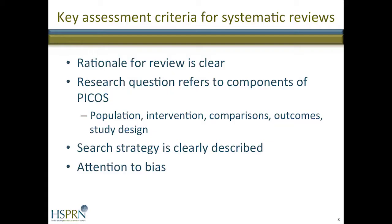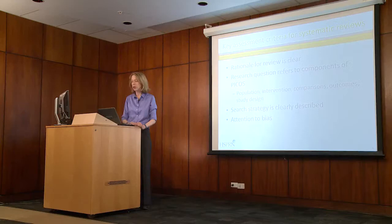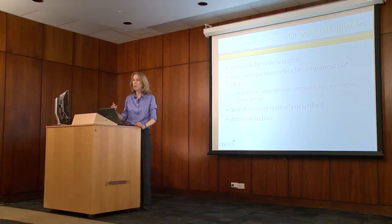There are several key assessment criteria for a systematic review. The rationale needs to be clear. The research question must be clearly formulated and must include the components we've outlined. There must be a clearly described search strategy, and attention must be paid to bias. For instance, the protocol can detail how multiple reviewers will evaluate the studies.